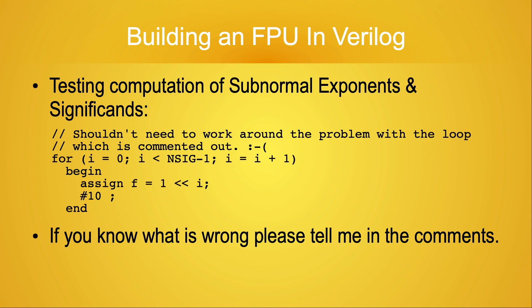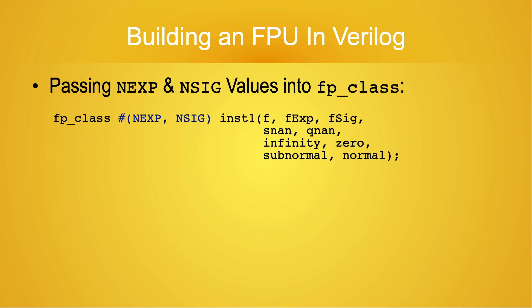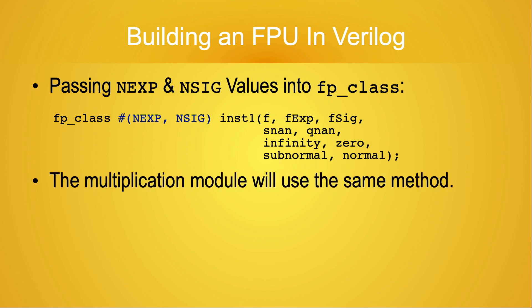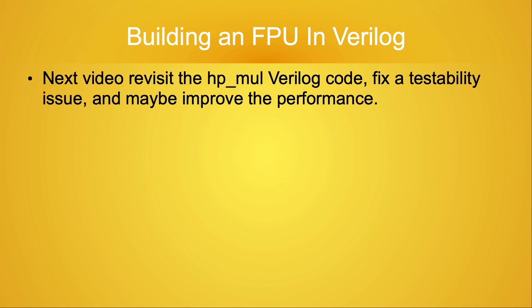Now, how does the test bench control what values FPClass uses for NEXP and NSIG? We pass the NEXP and NSIG values when we instantiate the module. It's important to note that FPClass receives these values in order, not by name. If you passed NSIG followed by NEXP, the definitions would be scrambled by the FPClass module. The multiplication module will pass the NEXP and NSIG values the same way. In the next video, I'll parameterize the HPMOL module like we did for HPClass, fix the testability issue which required commenting out the ELSE clause as was covered in the previous video, and maybe even improve the performance a bit in the process.